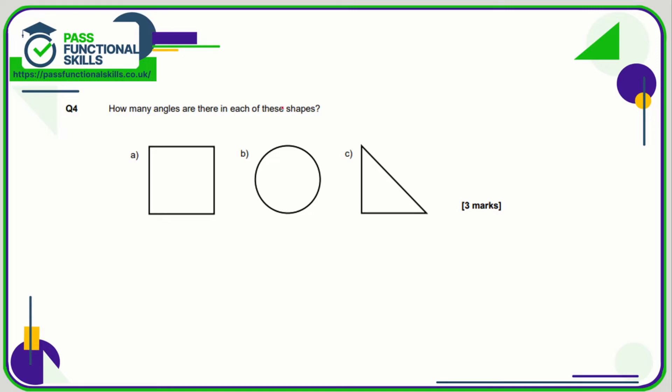How many angles are there in each of these shapes? Well, in shape a we've got one, two, three, four. B, we don't have any angles. And c, we have one, two, three. So four, zero, and three.